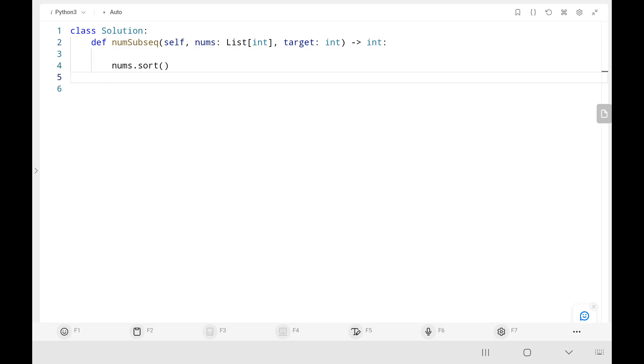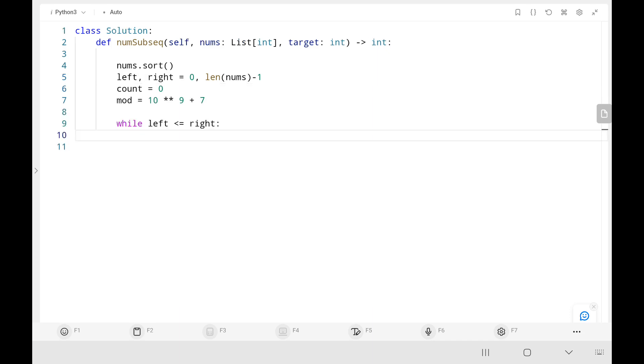Here I'm sorting the input array. Here I'm initializing left and right pointers, 0 and the last index. Then I will initialize count variable as 0 at the start. Then I will write a while loop. I will run the while loop until the left pointer is less than equal to the right pointer. In the first if condition, I will add the minimum value and the maximum value. If it is greater than the target value, I will move my right pointer to the left.